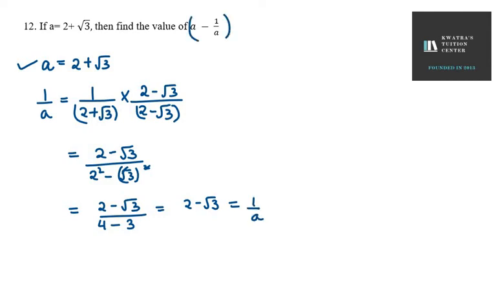Aab humay kya karna hai? In doon ko subtract karna hai. Toh, a is 2 plus under root 3. A minus 1 over a equals a ki value daagay. Minus. 1 over a ki value daagay. 2 minus under root 3.